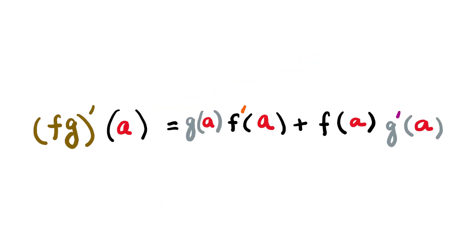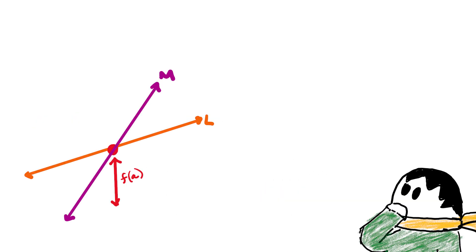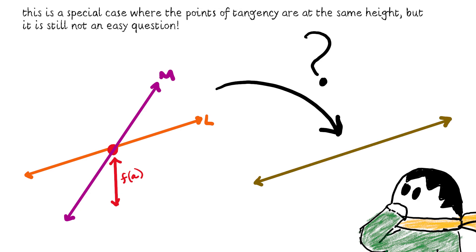The product rule tells us that the new slope is the weighted sum of old slopes. So just by looking at the geometric data of l and m, could we figure out this new tangent line without using any limits or derivatives?